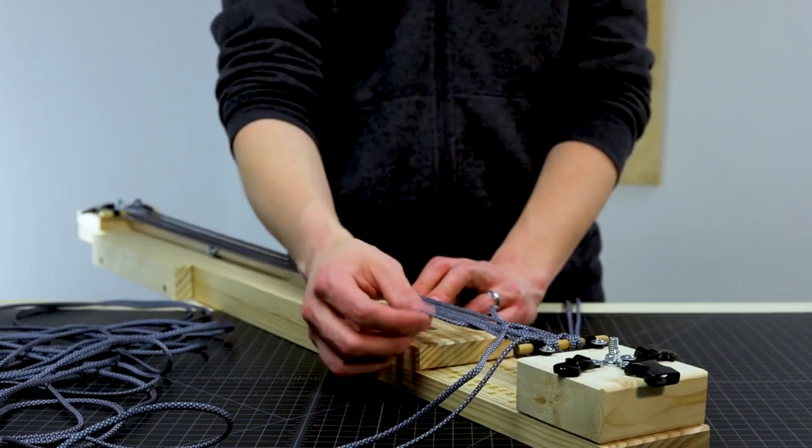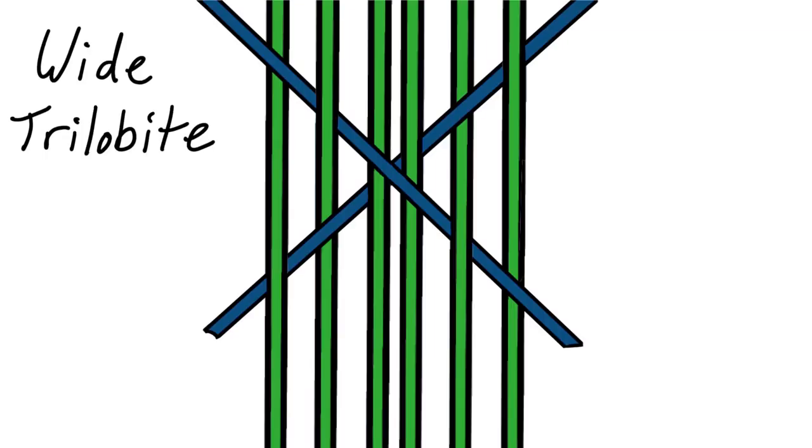Since this pattern is a little bit busy, here's a drawing that might be a little bit easier to follow. It's color coded with the center strands one color and your weave cord is the other color, with that X in the middle.